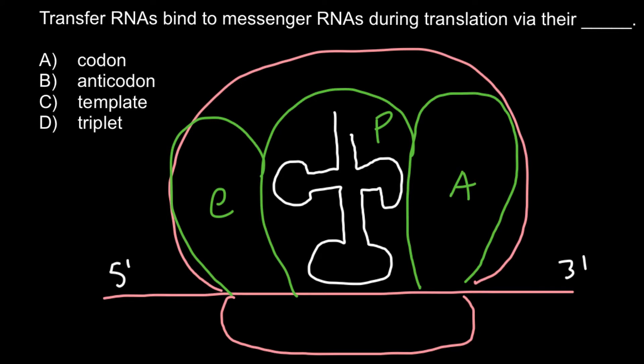This only concerns the first tRNA that would bind to the large ribosome subunit. So how do we memorize the names of these sites?